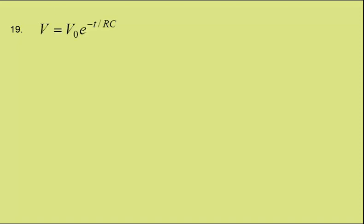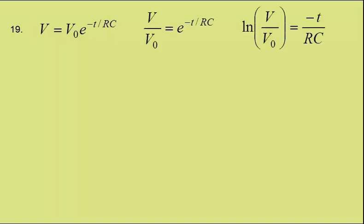We're using V equals V₀ e to the minus T over RC. We can rearrange to give this expression, then take natural logs of both sides. The natural log of e to a power is simply the power. We can then rearrange for R.